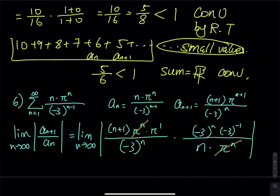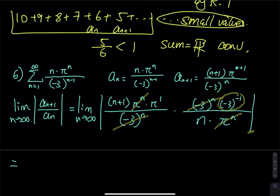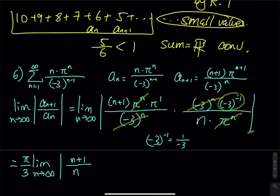After cancelling pi to the n and negative 3 to the n, we bring negative 3 to the denominator — but don't forget we have an absolute value. Taking the limit, the constant on top is pi and the bottom is negative 3 raised to the negative 1, which is 1 divided by negative 3. Taking the absolute value removes the negative sign.